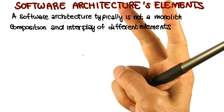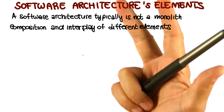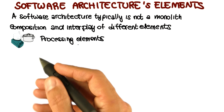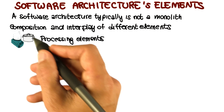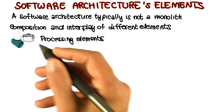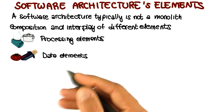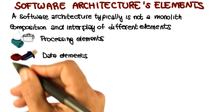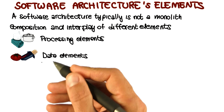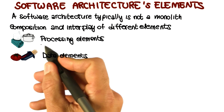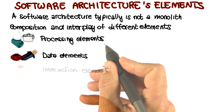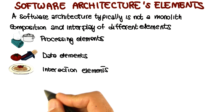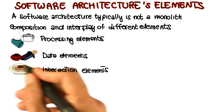Processing elements, data elements, and interaction elements. Processing elements are those elements that implement the business logic and perform transformations on data. Data elements, also called information or state, are those elements that contain the information that is used and transformed by the processing elements. And finally, the interaction elements are the glue that holds the different pieces of the architecture together.